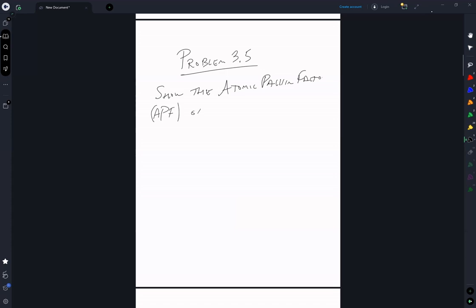The atomic packing factor APF of the body centered cubic is equal to 0.68. So the atomic packing factor is the volume of atoms divided by the unit cell volume.